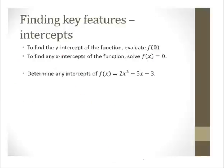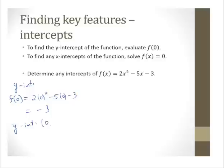Now let's find key features. To find the y-intercept, you evaluate f(0); to find x-intercepts, you solve f(x) = 0. For the function f(x) = 2x² − 5x − 3, f(0) = 2(0)² − 5(0) − 3 = negative 3. So the y-intercept is (0, negative 3).